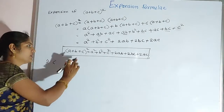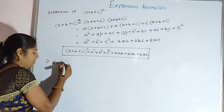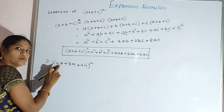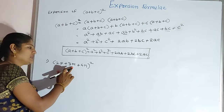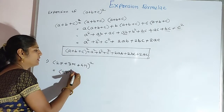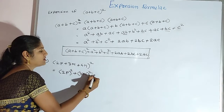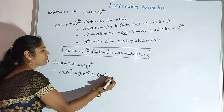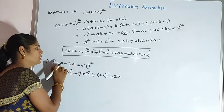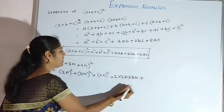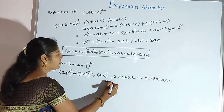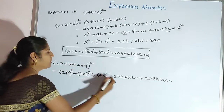We solve one example using this expansion formula: 2p plus 3m plus 4m, the whole bracket squared. First term is 2p, second term is 3m, third term is 4m. By the formula: first term squared 2p square, plus second term squared 3m square, plus third term squared 4m square, plus 2 into the first two terms 2p into 3m, plus 2 into the next two terms 3m into 4m, plus 2 into the first and last terms 2p into 4m.